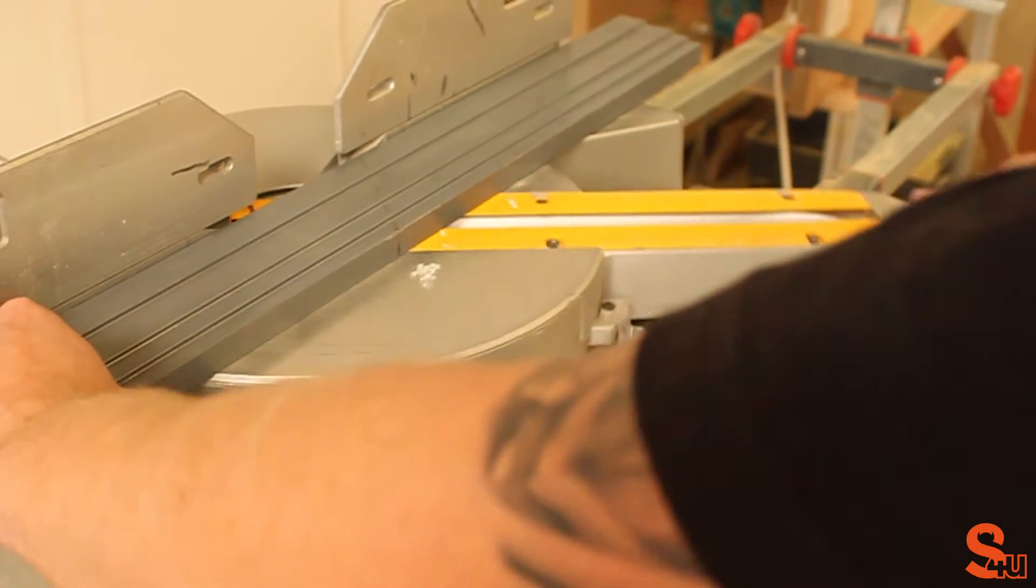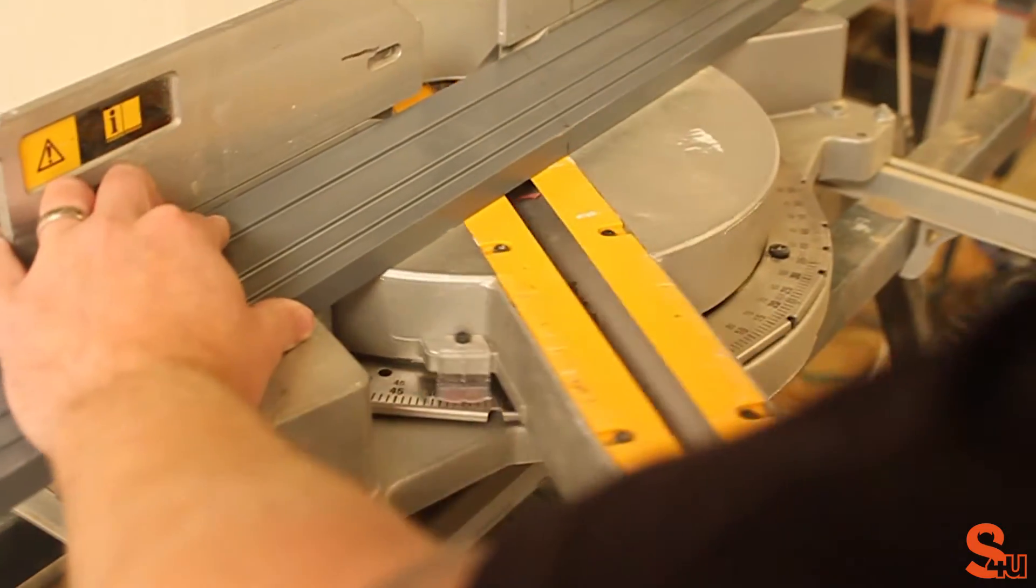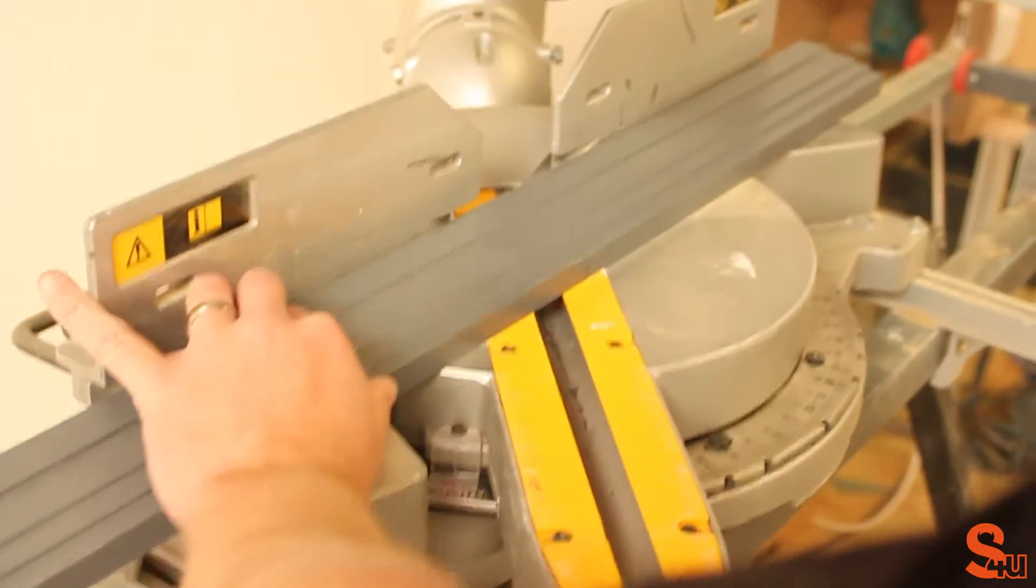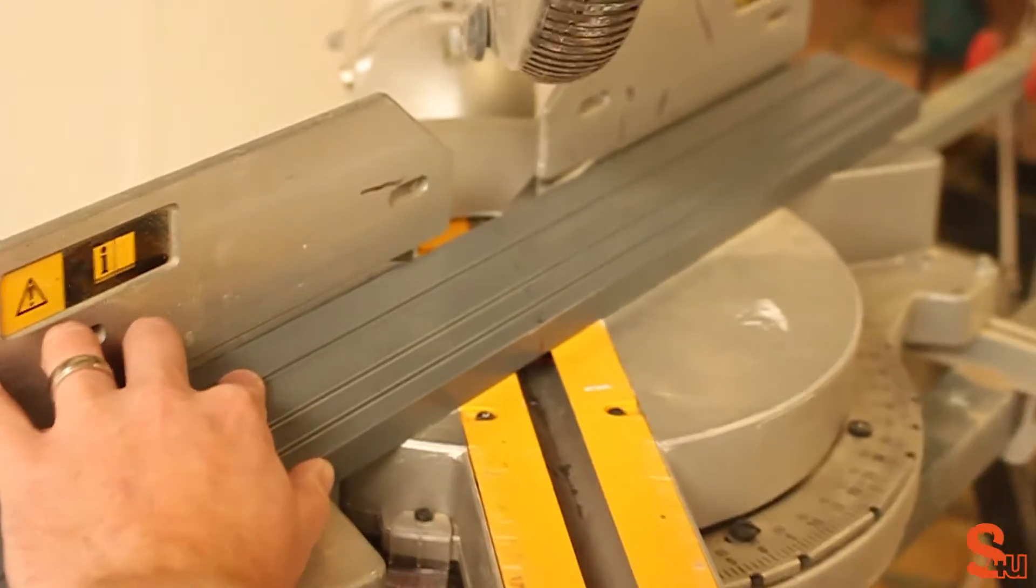We set our mitre saw to the opposite angle, opposite 45 degree angle, and make that cut.